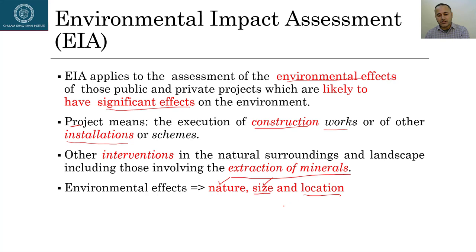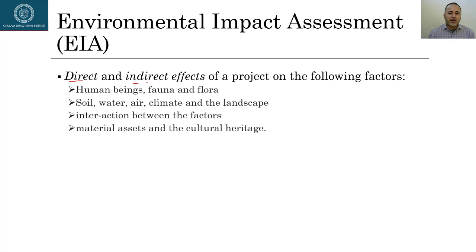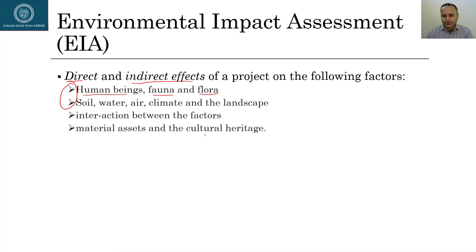There may be direct and indirect effects of the project on human beings, fauna and flora, soil, water, air, climate, the landscape, and the interaction of all these factors. It also involves material assets and cultural heritage. For example, in Canada, whenever a government starts a project in indigenous communities, one main component of the EIA is not to disturb the cultural heritage of those areas.